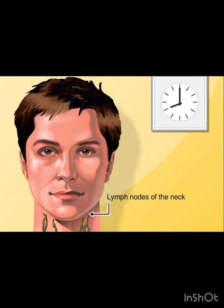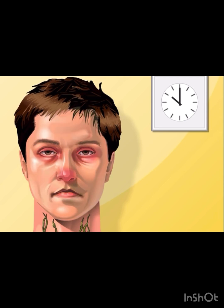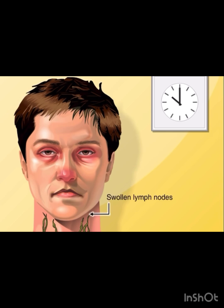Interpretation of findings: Benign lymph nodes are typically less than one centimeter. They are smooth, rounded, non-tender and mobile. Reactive lymph nodes are typically smooth, can be swollen, rounded, tender, mobile and associated with infected symptoms.